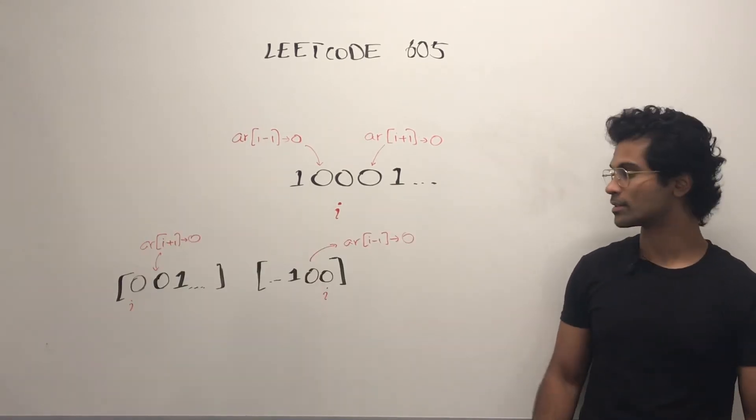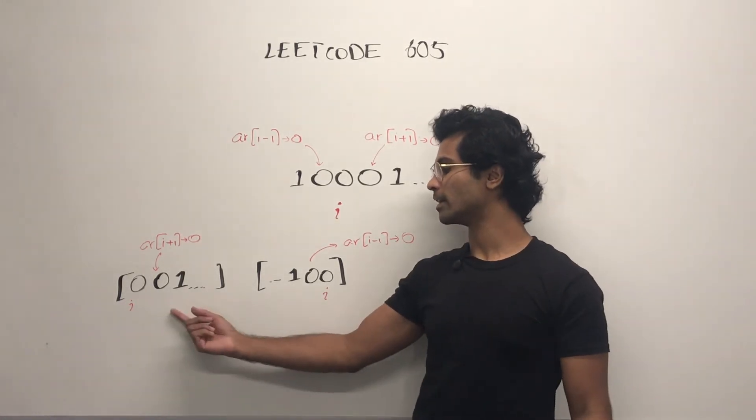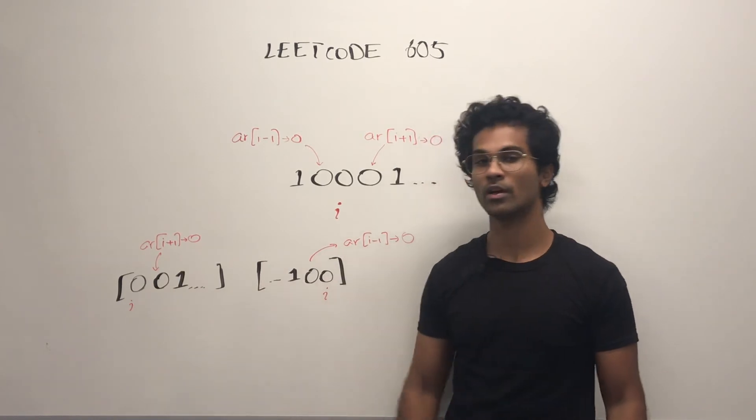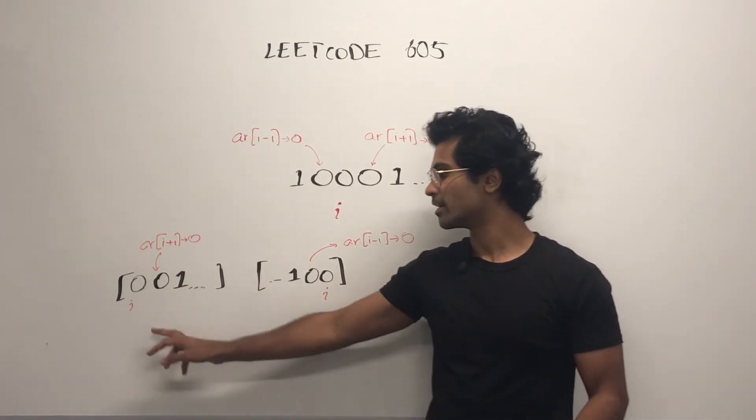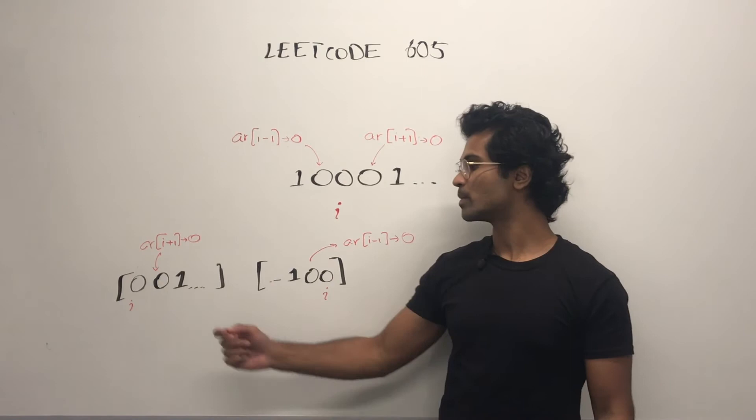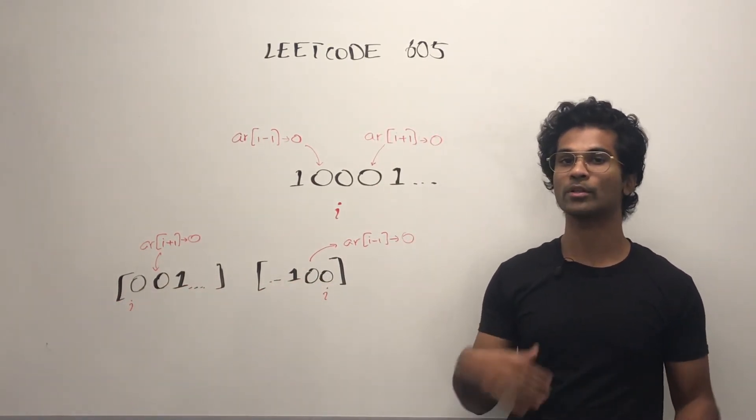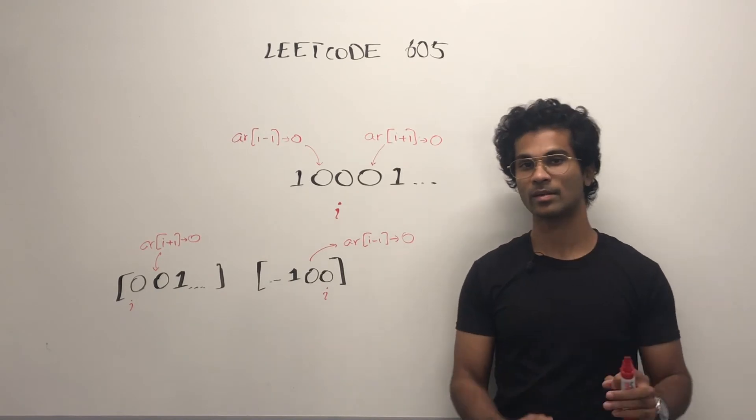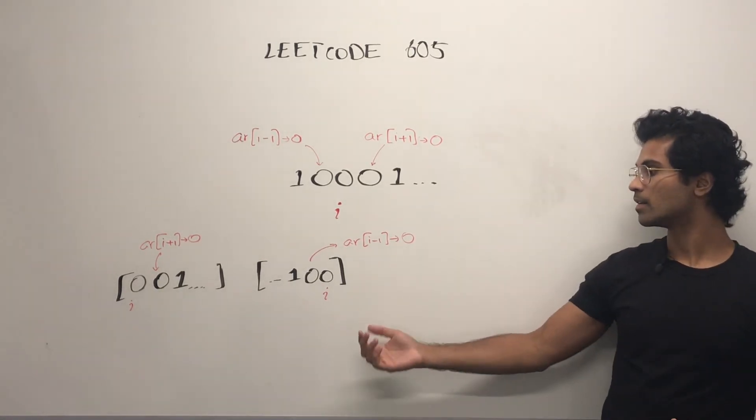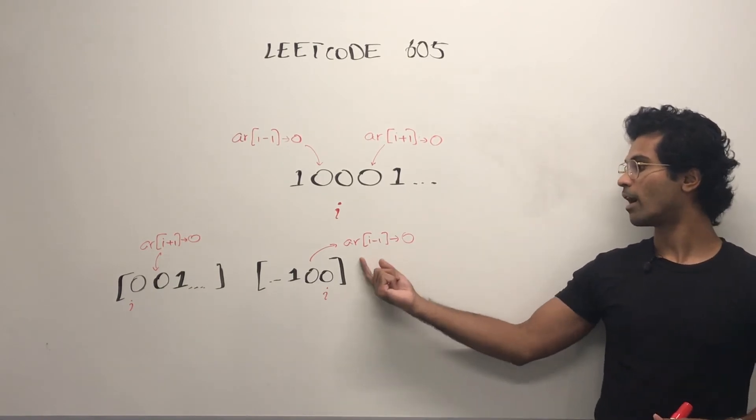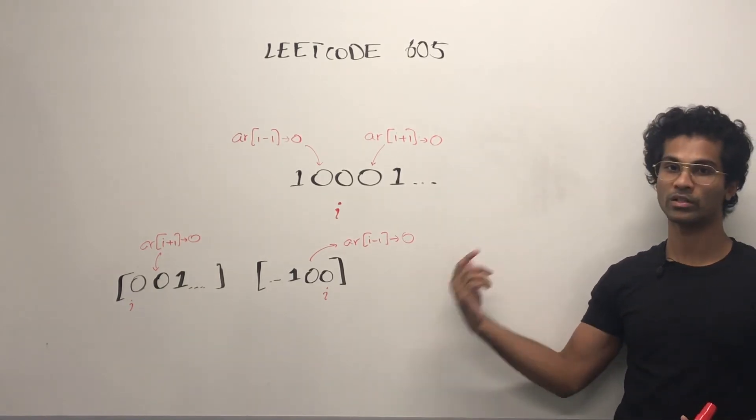Here are the edge cases. If we're starting out in the beginning of the array and we have zeros, so two consecutive zeros, we can actually make the i-th index a 1. That's because there's nothing on the left side, but we still have to make sure that i+1 is a 0. Similarly, if we're at the end and we want to make i a 1, we have to check if i-1 is also a 0.